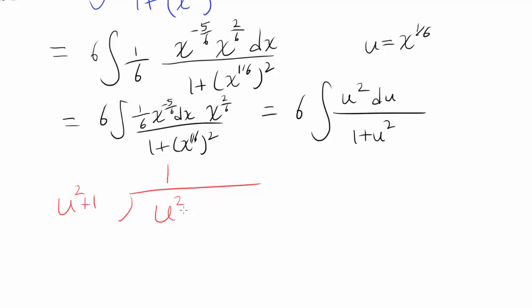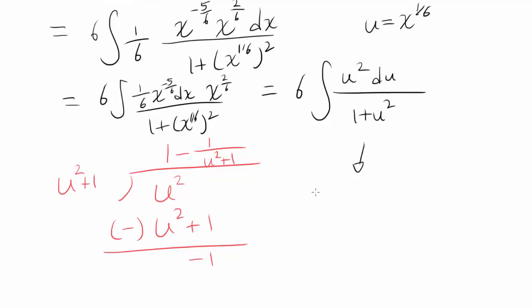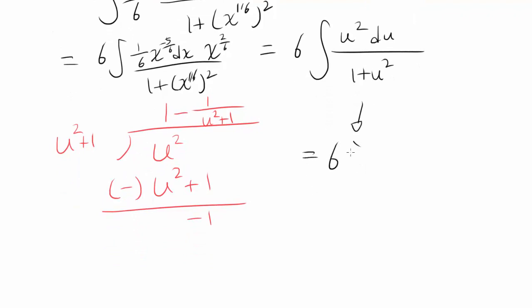So let's write 1 and you multiply it out to get u squared plus 1. Subtracting gets us negative 1. So you have remainder of negative 1 over u squared plus 1. So this expression turns out to be 6 times integral of 1 minus 1 over u squared plus 1 du and this is very easy to evaluate.